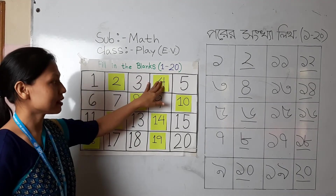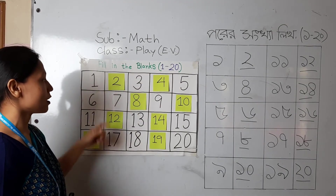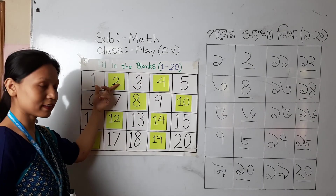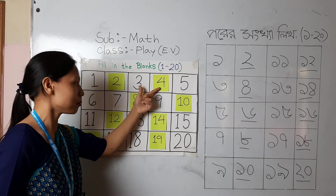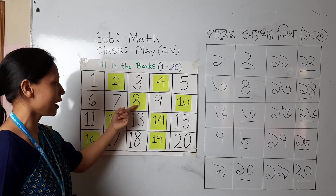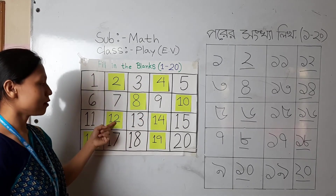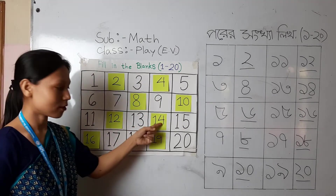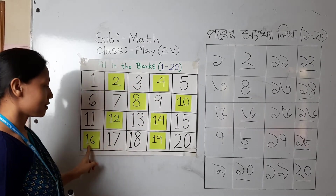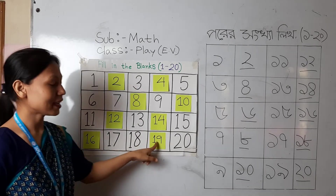Now let's look at the numbers: 10, 12, 14, 16, 19.